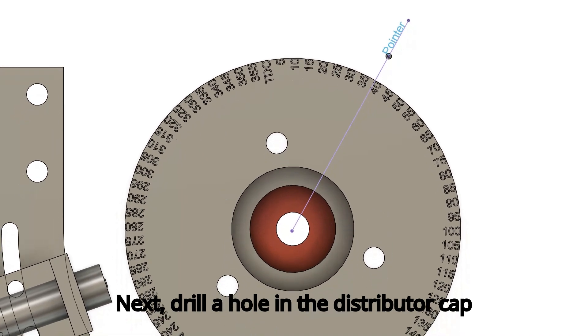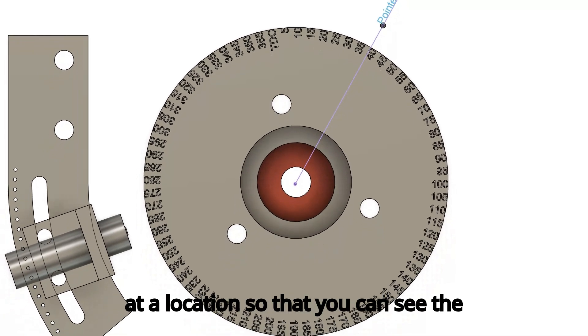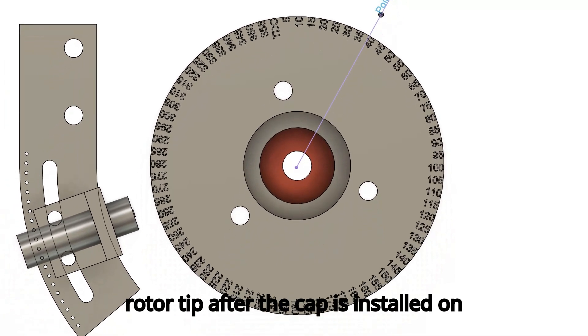Next, drill a hole in the distributor cap where the number one cylinder terminal is, at a location so that you can see the rotor tip after the cap is installed on the distributor.